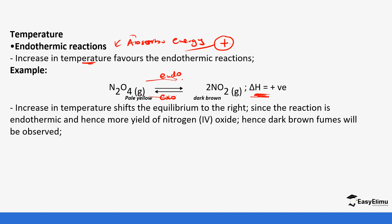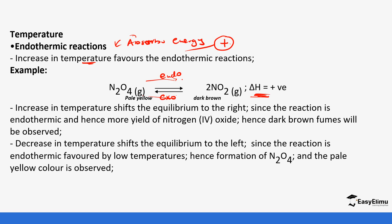If you increase the temperature you'll see more brown fumes. If you decrease the temperature the equilibrium shifts to the left, and you'll notice more dinitrogen tetraoxide is formed, which is pale yellow in color, because the back reaction is exothermic and is favored by low temperatures.